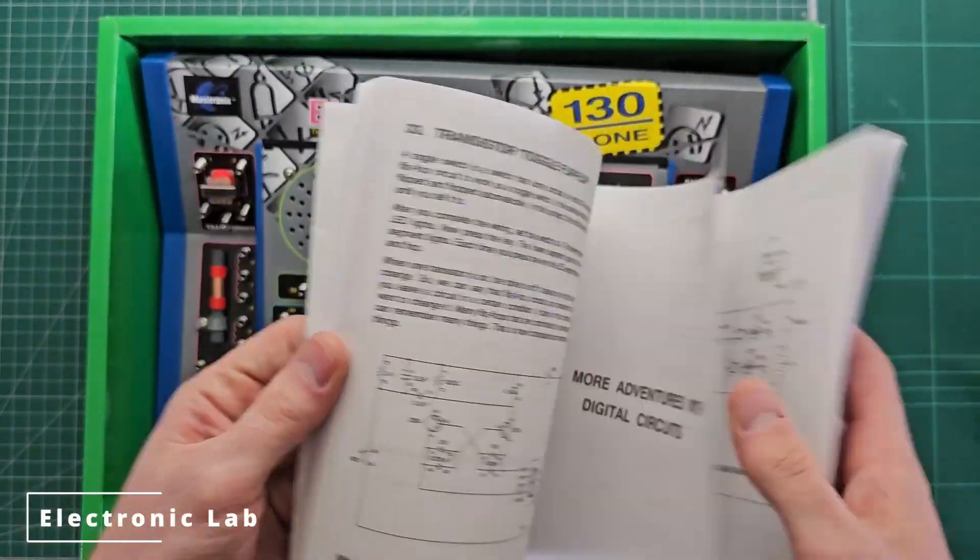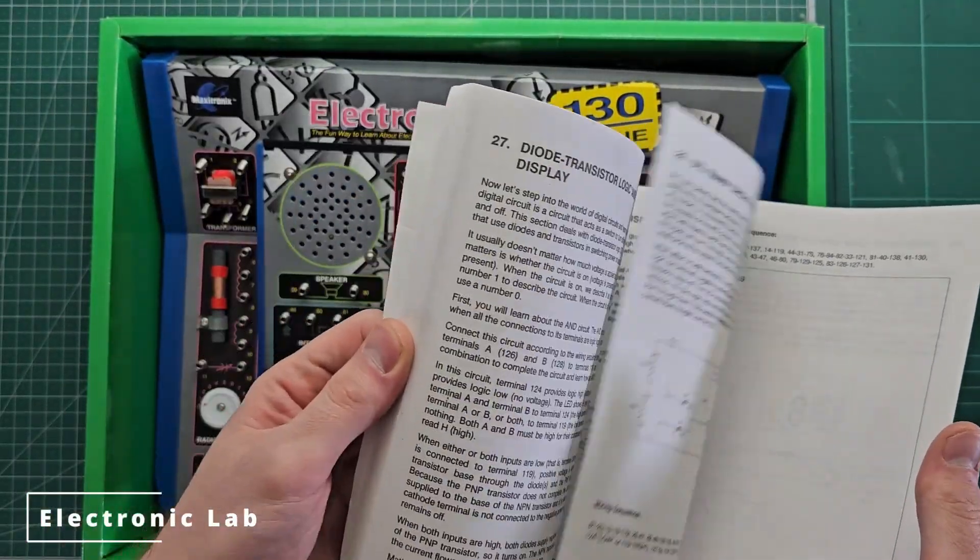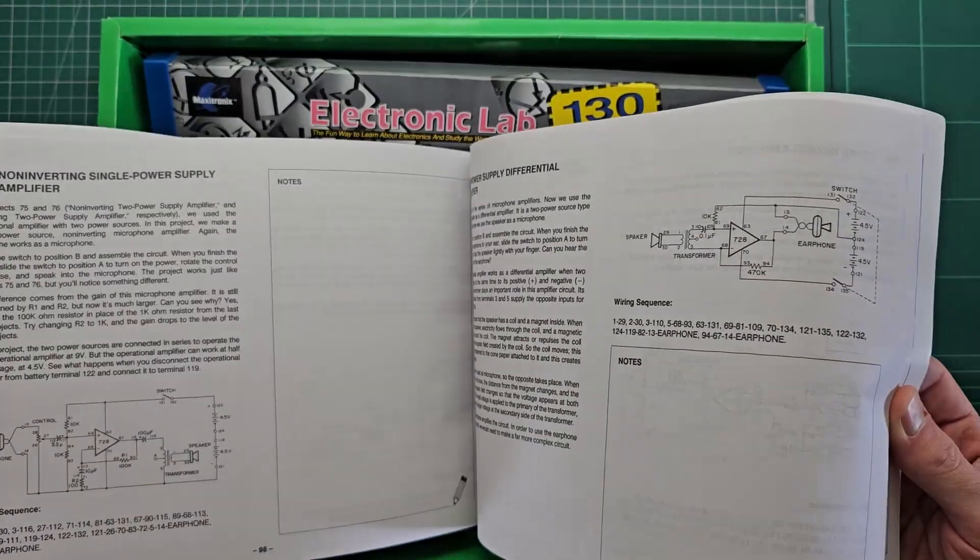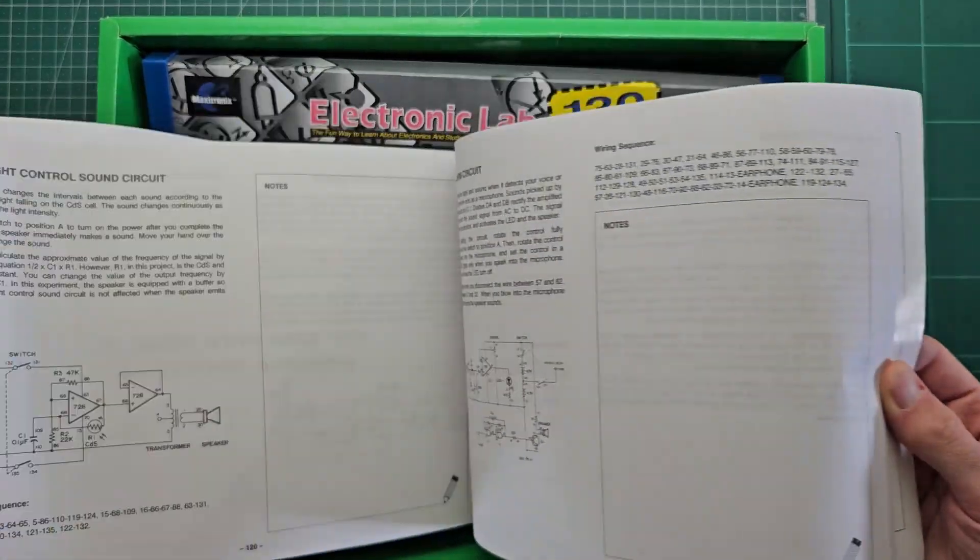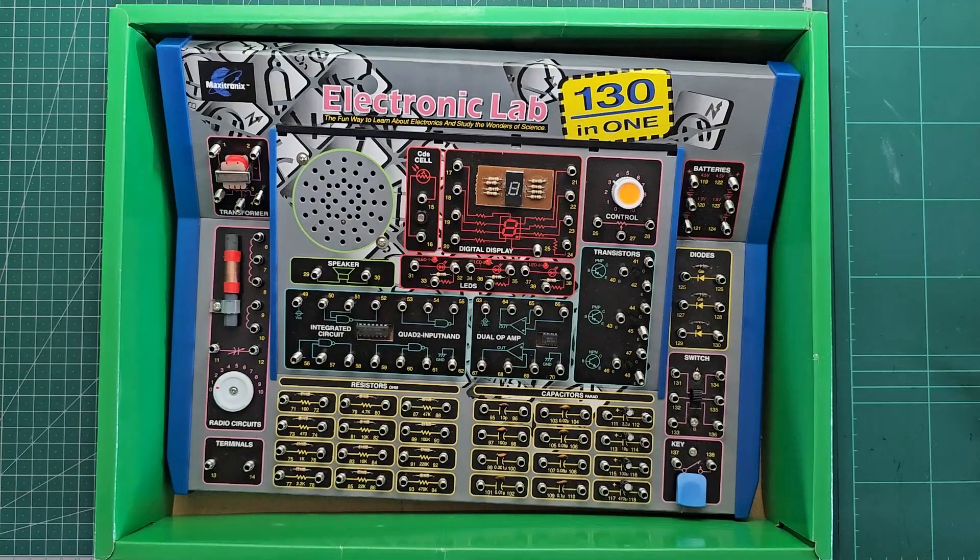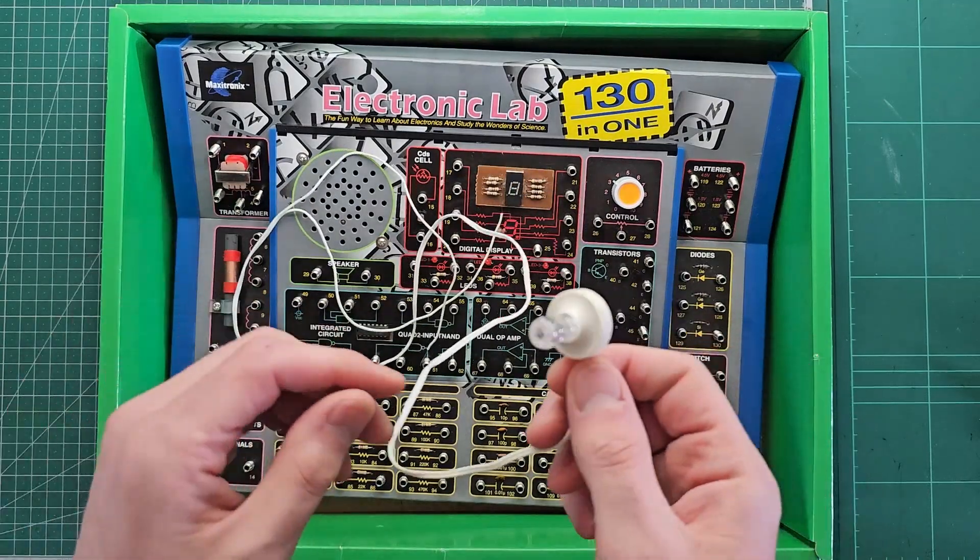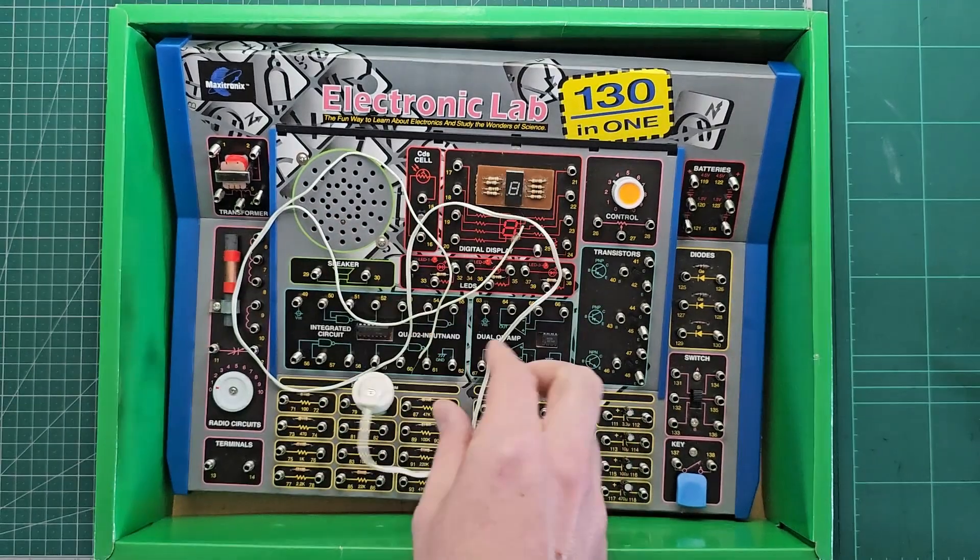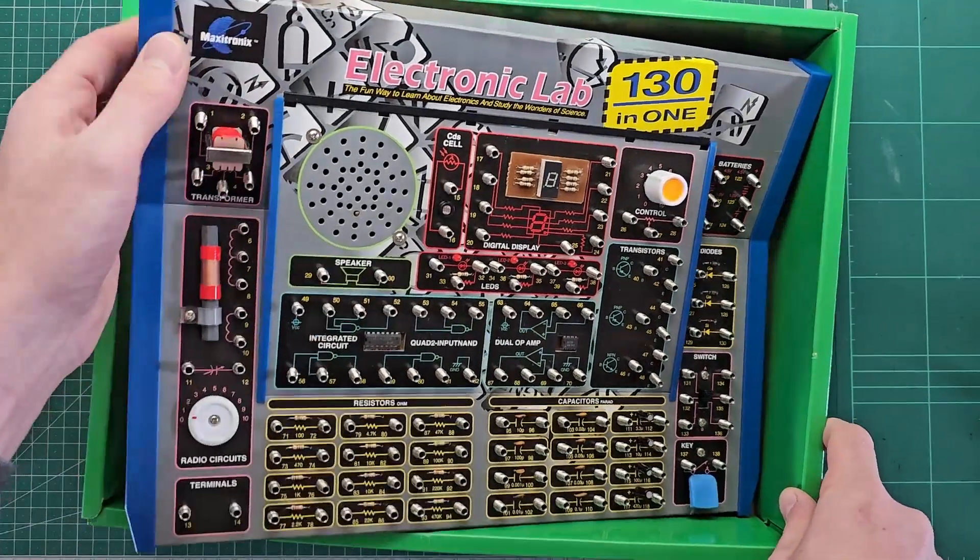The manual includes a variety of different circuits organized from easy to more complicated. They've got an explanation of each circuit and a circuit diagram, and also a wiring sequence which makes it easier to tell how you wire the thing up based on the connections on the front panel. It even comes with an old earpiece speaker which looks uncomfortable. So let's start building some circuits.